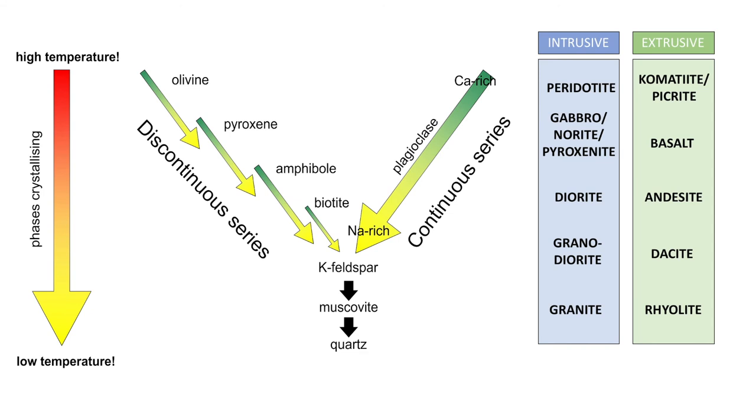So examples of intrusive ultramafic rocks would be peridotite. We can break that down further into wehrlite, websterite, dunite, lherzolite. And the extrusive equivalent of those rocks would be things like komatiites or picrites, high magnesium, very ultramafic rocks.